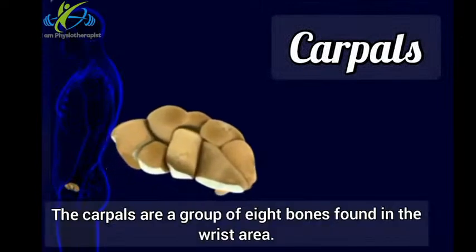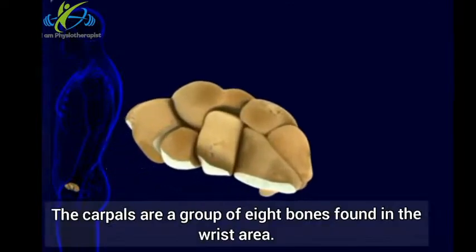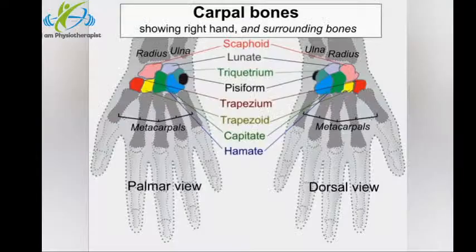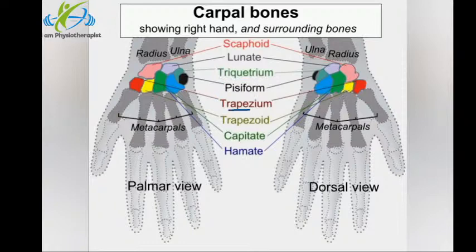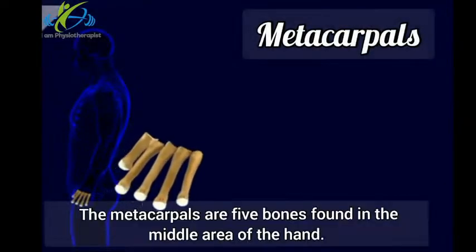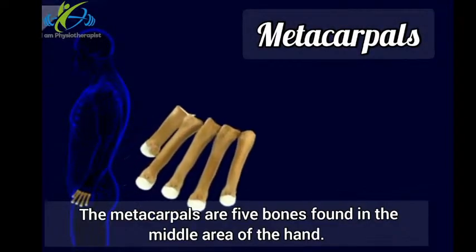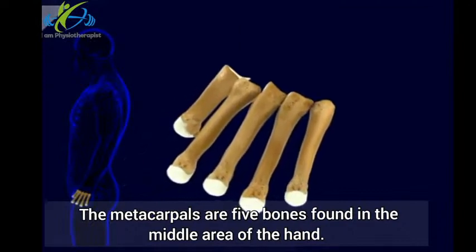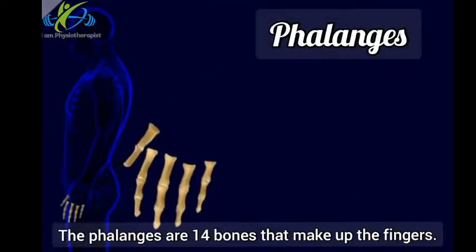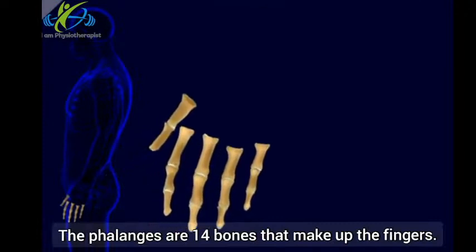Carpals: The carpals are a group of eight bones found in the wrist area. The names of the carpal bones are: scaphoid, lunate, triquetral, pisiform, trapezium, trapezoid, capitate, and hamate. Metacarpals: The metacarpals are five bones found in the middle area of the hand. Phalanges: The phalanges are 14 bones that make up the fingers.